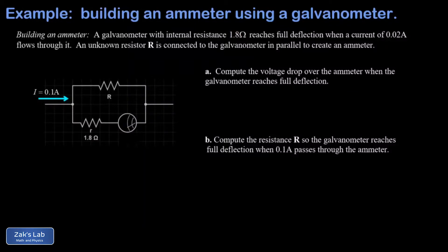In this problem we're looking at how to build an ammeter using a galvanometer. A galvanometer is a generic device that will tell you whether or not current is flowing through it, as a needle deflects against a scale. This galvanometer has a pretty large internal resistance, so it's not going to make the best ammeter in the world, but we can at least get into the principle of how it works.